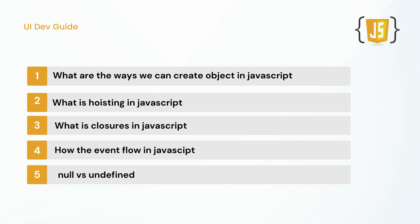The next question is hoisting. What is hoisting? This is the most common and most asked question, so you have to be very sure about what you are saying. You have to break hoisting into two parts. First, tell what exactly hoisting is in JavaScript — it is related to undefined. Then you can tell about the difference between let and const. You also need to be sure about how function hoisting and variable hoisting happen.